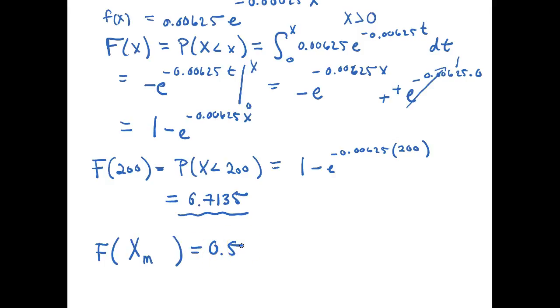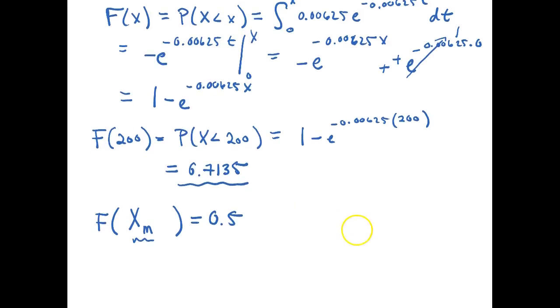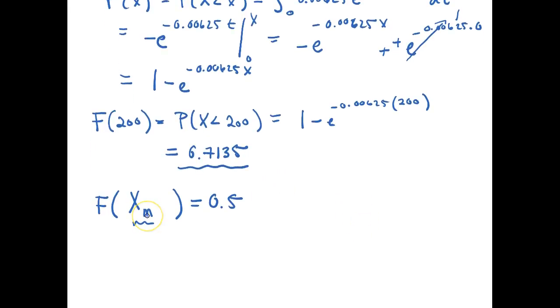So all we have to do now is plug in X sub m for in our cumulative density function and set it equal to 0.5 and solve for X sub m the median value. So this is equal to 1 minus e to the negative 0.00625, that's our lambda, of X sub m. This is equal to 0.5.